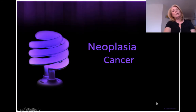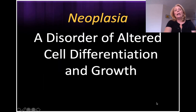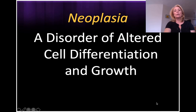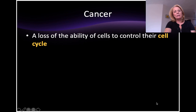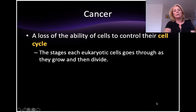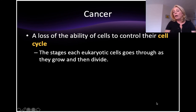Today's video is going to be about neoplasia and cancer. Neoplasia is a disorder of altered cell differentiation and growth. Cancer is actually the loss of the cell's ability to control or go through their cell cycle normally. The cell cycle has to do with how cells not only divide but how they grow on a daily basis.